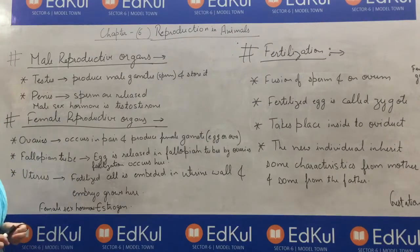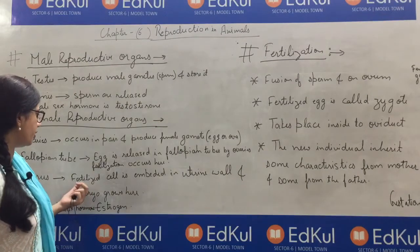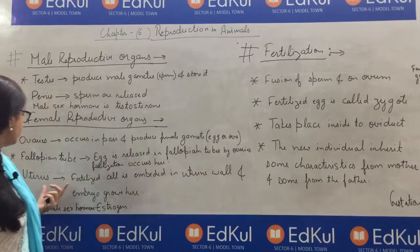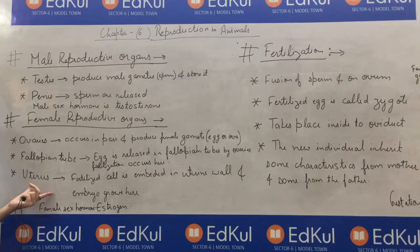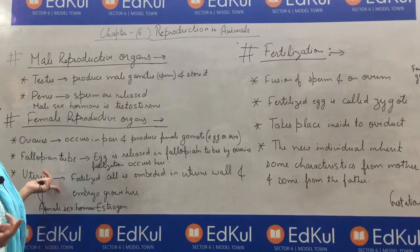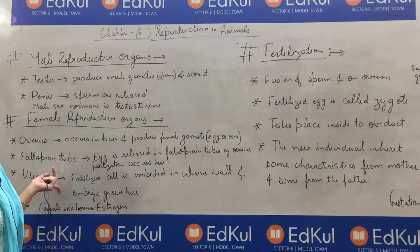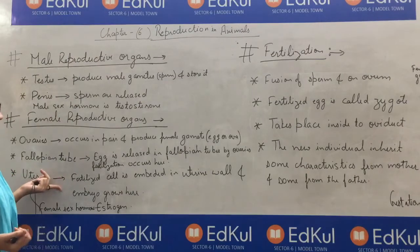This embryo is embedded in the uterus, where it remains for the next 9 months. Since it requires oxygen and food, that is supplied by the placenta.